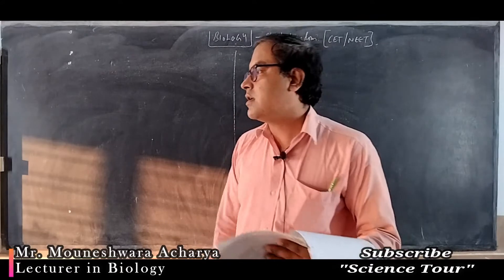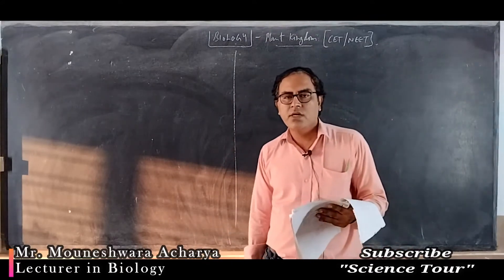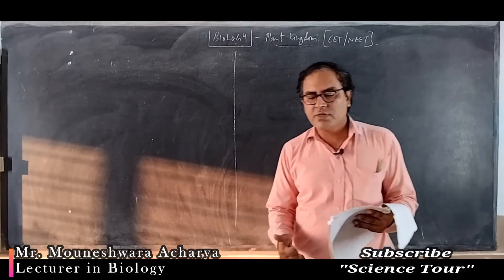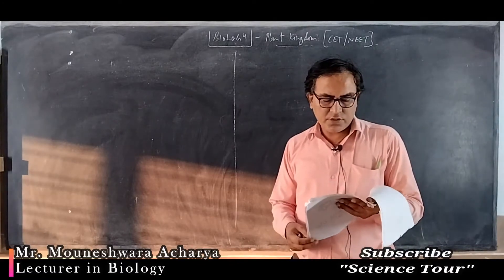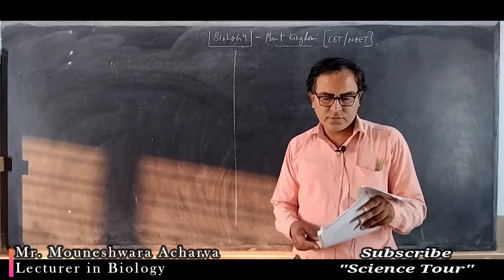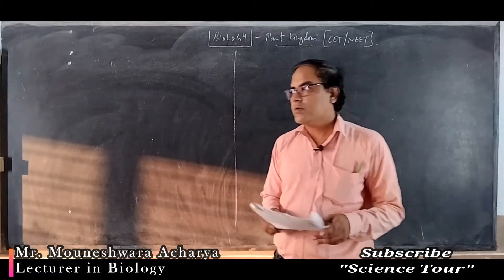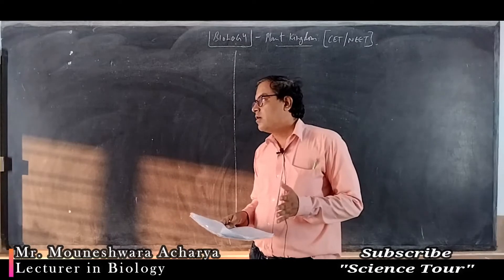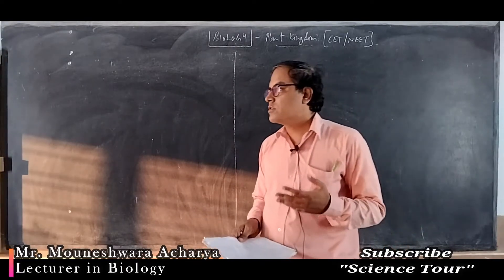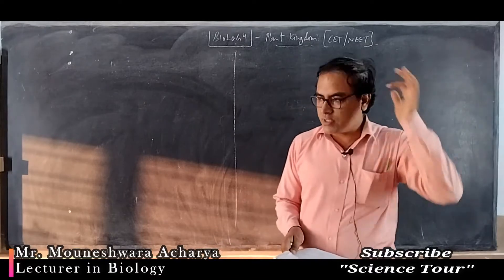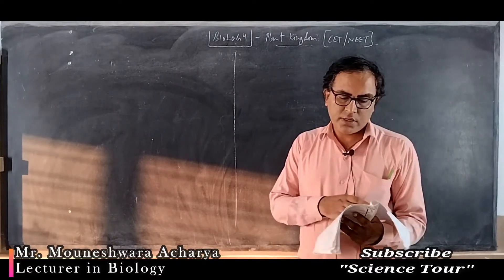The third important concept under this chapter is about classification systems. The artificial system of classification was given by Carolus Linnaeus, based on gross morphology — the external features of plants. The natural system of classification was given by George Bentham and Hooker.